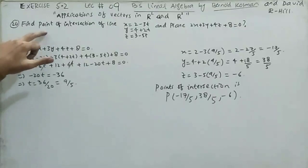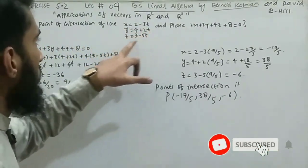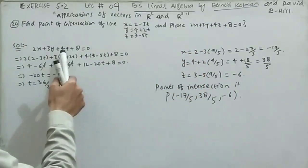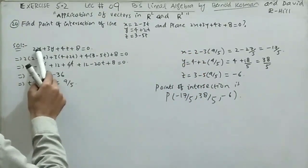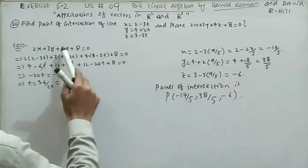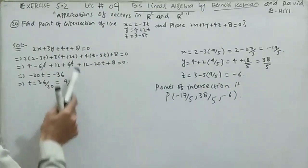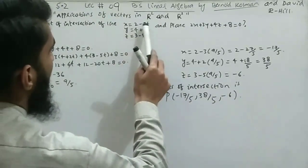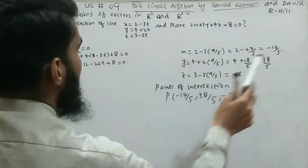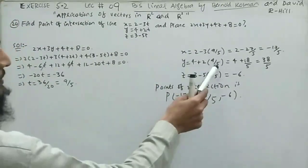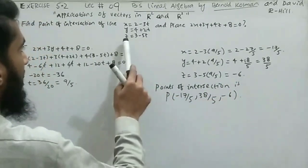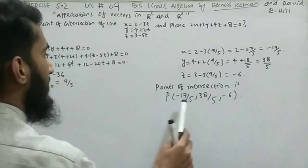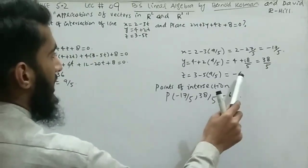Question 20: find the point of intersection of the line x = 2 - 3t, y = 4 + 2t, z = 3 - 5t and the plane 2x + 3y + 4z + 8 = 0. Substituting into the plane equation: 2(2-3t) + 3(4+2t) + 4(3-5t) + 8 = 0, solving gives t = 9/5. Then x = 2 - 3(9/5) = -17/5, y = 4 + 2(9/5) = 38/5, z = 3 - 5(9/5) = 3 - 9 = -6. The intersection point is (-17/5, 38/5, -6).